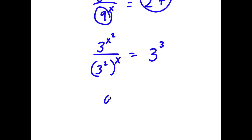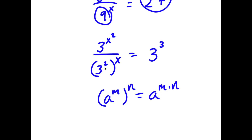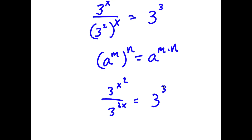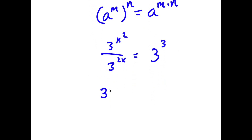Now, if I have something in the form a to the power of m to the power of n, this is equal to a to the power of m times n. So 3 squared to the power of x is going to equal 3 to the power of 2 times x, which is 3 to the power of 2x. This is equal to 3 to the power of 3. And now I can rewrite this as 3 to the power of x squared times 3 to the power of negative 2x is equal to 3 to the power of 3.